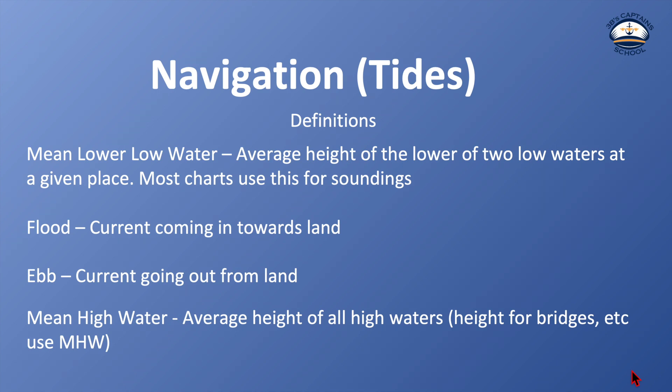Flood is the current coming towards land. Ebb is the current going out from land. Mean high water is the average height of all high tides, and it's the water level used when measuring the height of a bridge, lighthouse, tower, or similar structure — they measure it from mean high water.